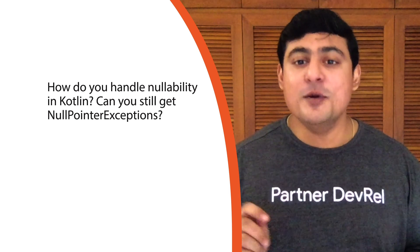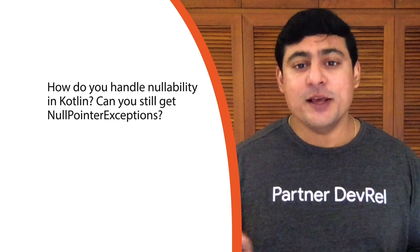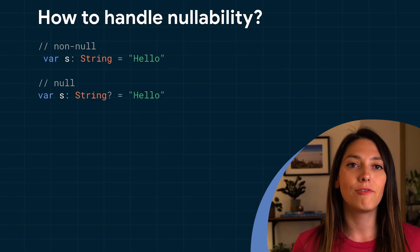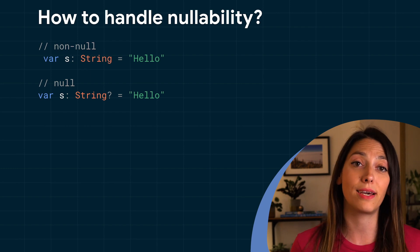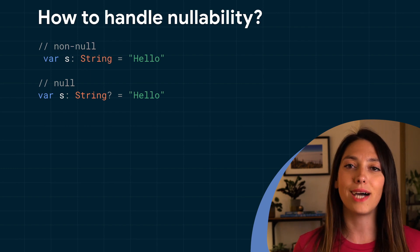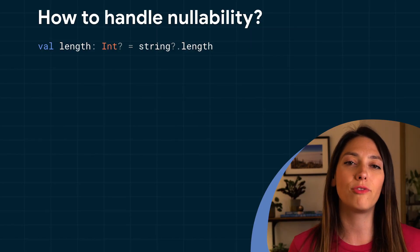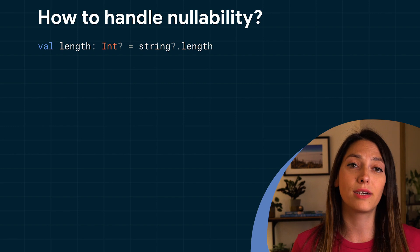How do you handle nullability in Kotlin? Can you get null pointer exceptions in Kotlin? In Kotlin, nullability is part of the type system. A variable needs to be declared from the beginning as nullable or non-nullable. Nullable types are marked with a question mark. Non-nullable variables cannot be assigned a null value, and nullable variables need to be checked for nullability before being used as non-null. If you don't want to check for null explicitly, you can use the question mark safe call operator.